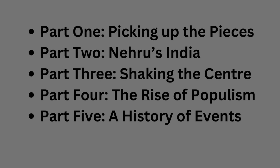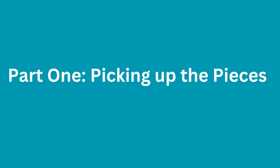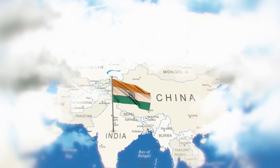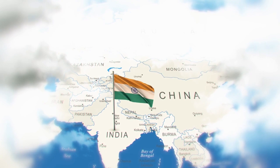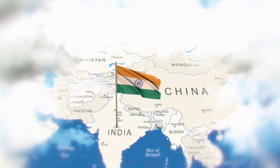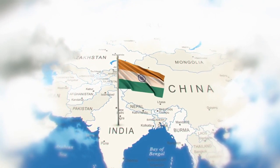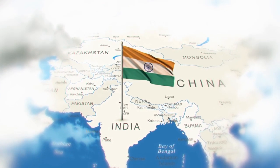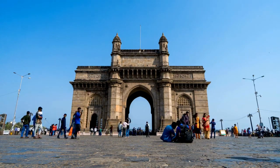Part 1: Picking up the pieces. This part covers the period from 1947 to 1951, when India faced the aftermath of partition, which divided the country into two nations, India and Pakistan. Partition caused massive violence, displacement, and suffering for millions of people who had to cross the new borders. It also created new challenges for the Indian government, such as integrating the princely states, securing Kashmir, resettling refugees, and drafting a constitution.